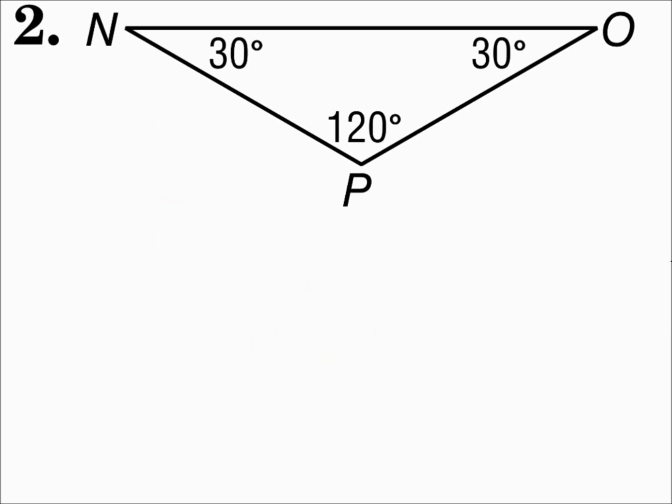Look at number two. Number two has one obtuse angle, so it's an obtuse triangle. If it has one obtuse angle, it's an obtuse triangle.